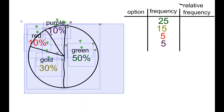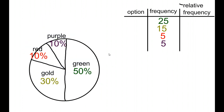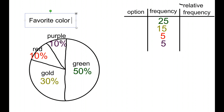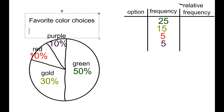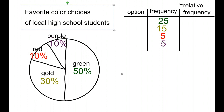Now you have all the major parts of your pie graph. The last thing we need to do is always add a title — so "Favorite Color Choices," and if you want to be a little more descriptive, maybe it's of local high school students. You put that title right up on top, and here you go — you have yourself a pie graph.